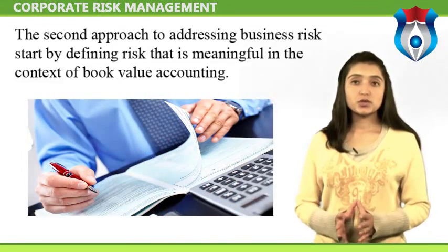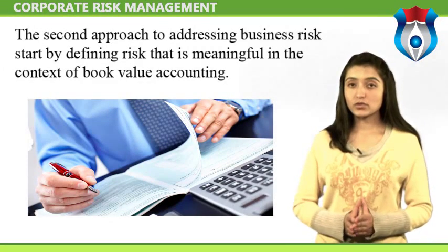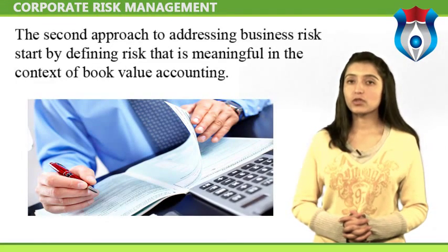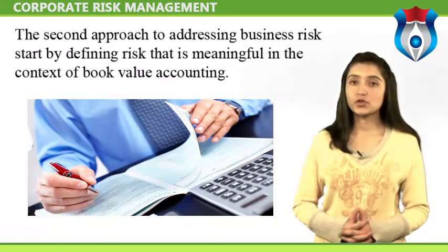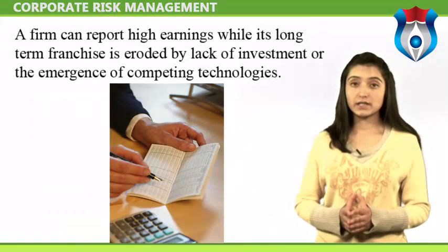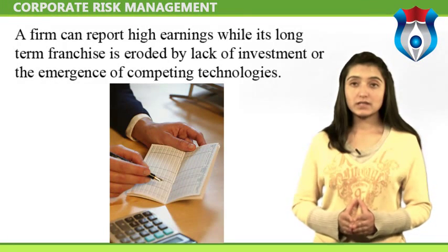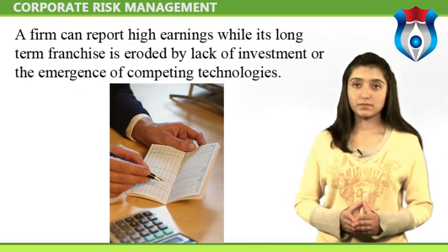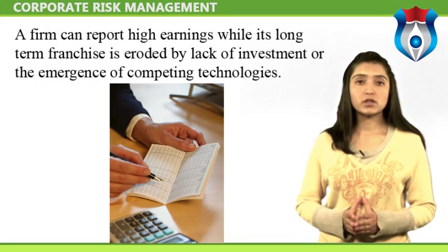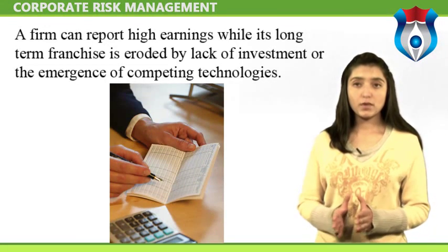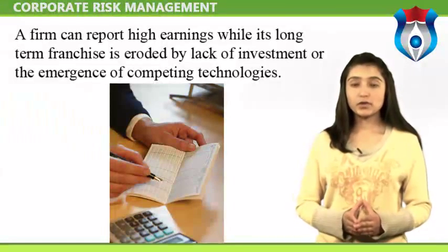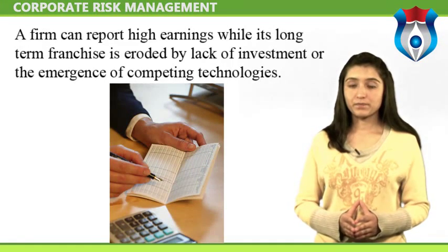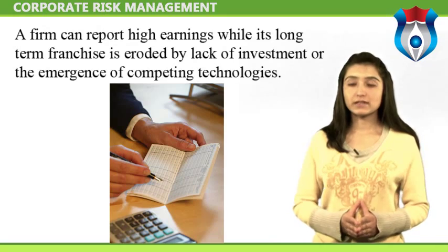Book Value: the second approach to addressing business risk starts by defining risk that is meaningful in the context of book value accounting. Most typical of these are earnings risk — risk due to uncertainty in future reported earnings — and cash flow risk — risk due to uncertainty in future reported cash flows. Of the two, earnings risk is more akin to market risk, yet it avoids the sometimes arbitrary assumptions of economic valuations. A firm's accounting earnings are a well-defined notion. However, a problem with looking at earnings risk is that earnings are non-economic — earnings may be suggestive of economic value but they can be misleading and are often easy to manipulate. A firm can report high earnings while its long-term franchise is eroded by lack of investment or the emergence of competing technologies, and financial transactions can boost short-term earnings at the expense of long-term earnings.